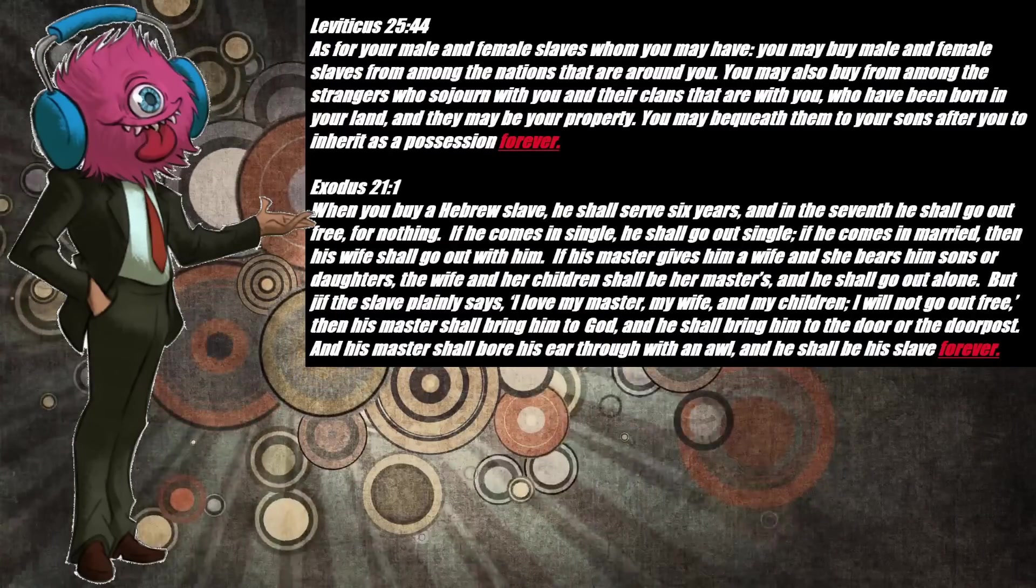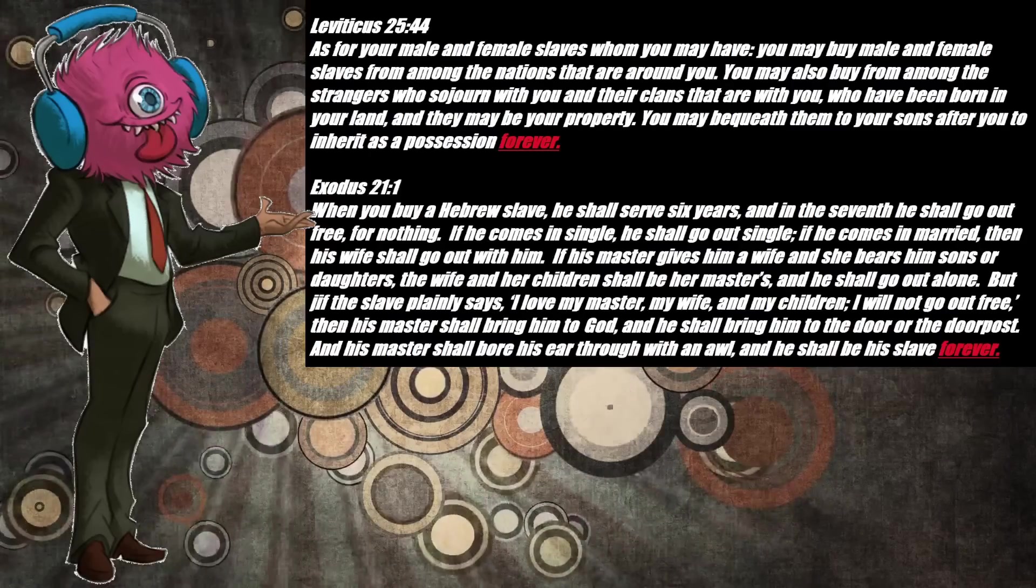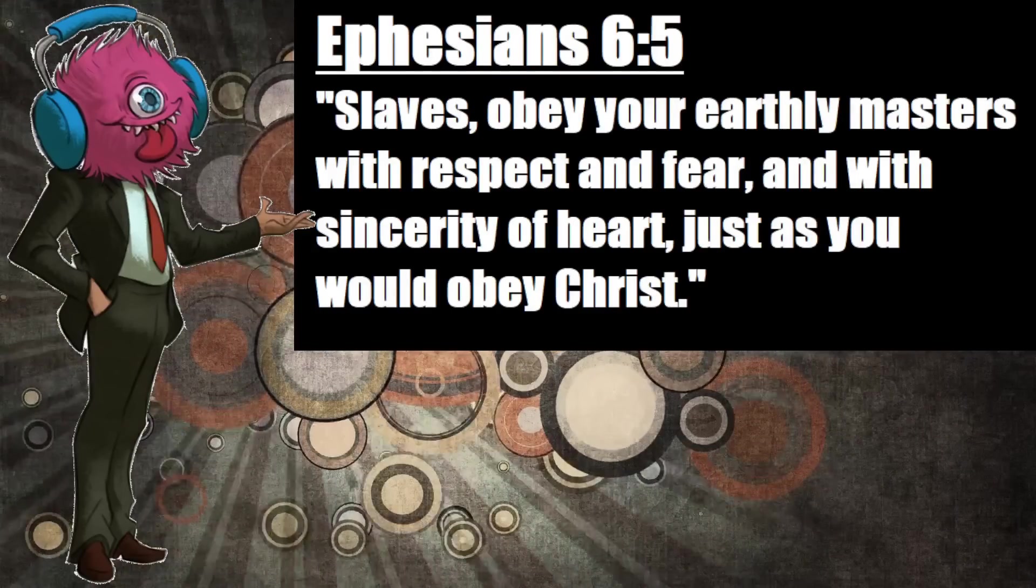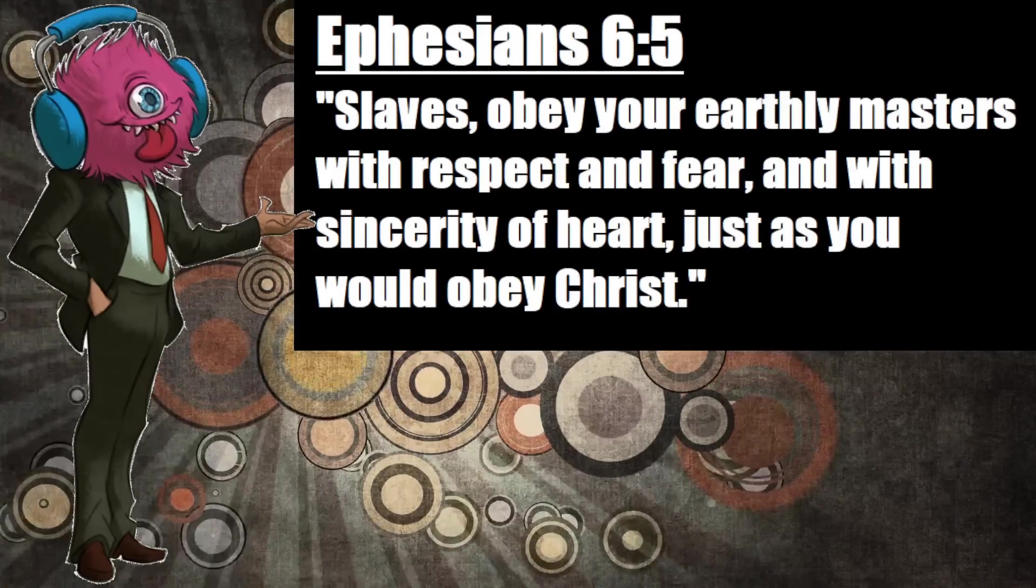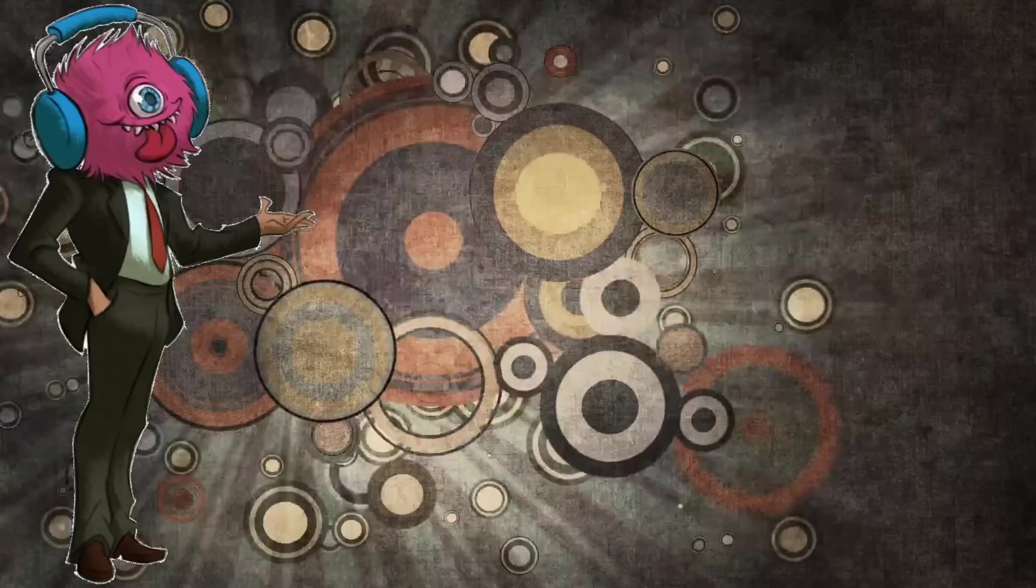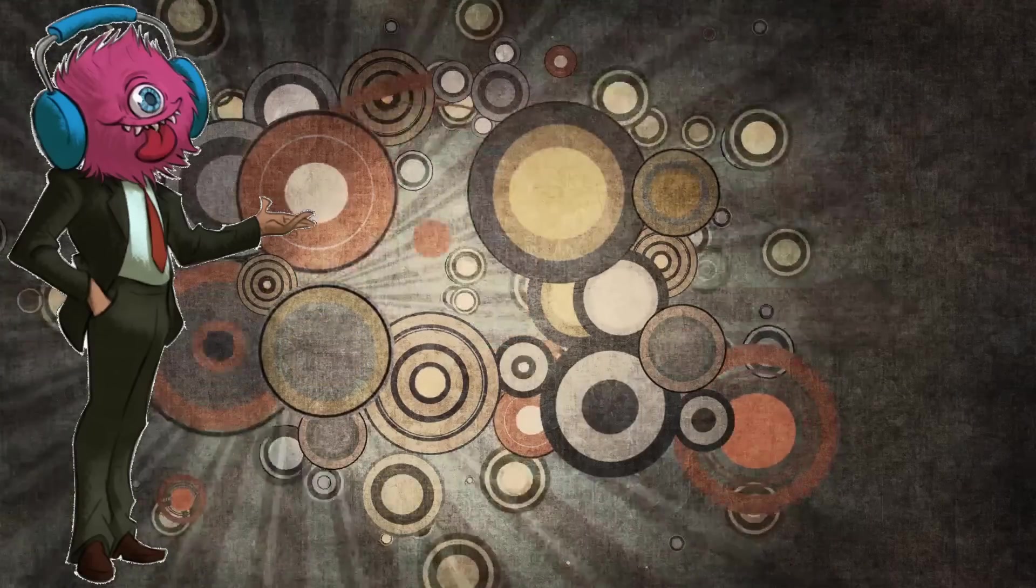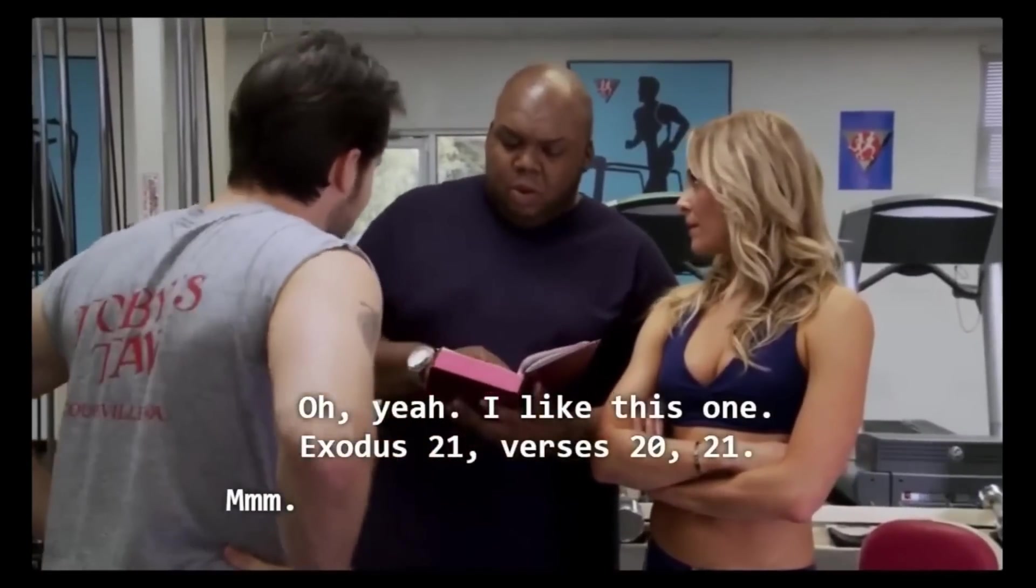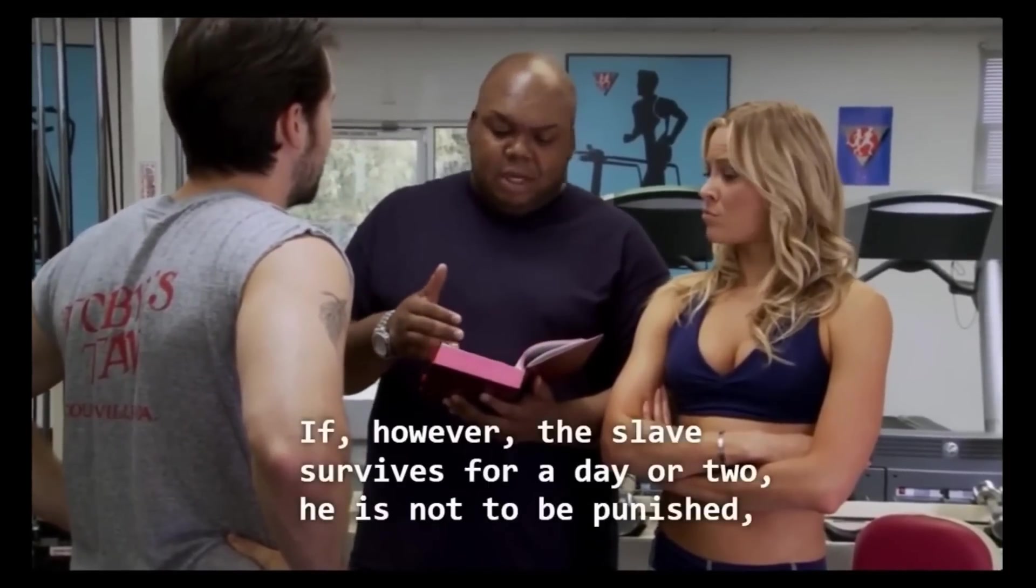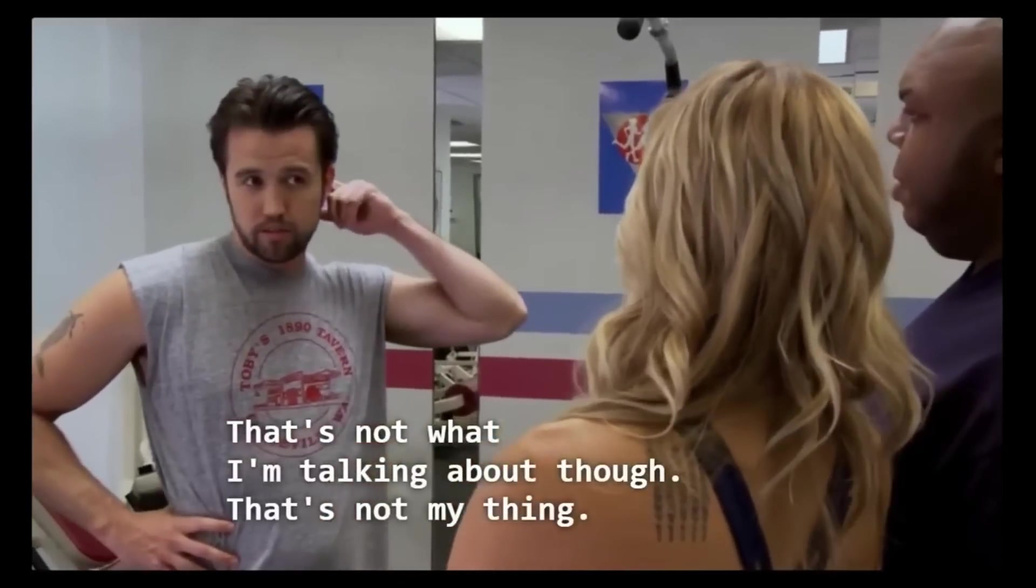If his master gives him a wife, and she bears him sons or daughters, the wife and her children shall be her masters, and he shall go out alone. But if the slave plainly says, I love my master, my wife, and my children, I will not go out free, then his master shall bring him to God, and he shall bring him to the door or the doorpost, and his master shall bore his ear through with an awl, and he shall be his slave forever. Ephesians 6:5, Slaves, obey your earthly masters with respect and fear, and with sincerity of heart, just as you would obey Christ. So don't bring your Christianity is opposed to slavery bullshit around here, Dennis. I like this Exodus 21 verses 20-21. When a man strikes his slave with a rod so hard that the slave dies, he shall be punished. If, however, the slave survives for a day or two, he is not to be punished for the slave is his property.